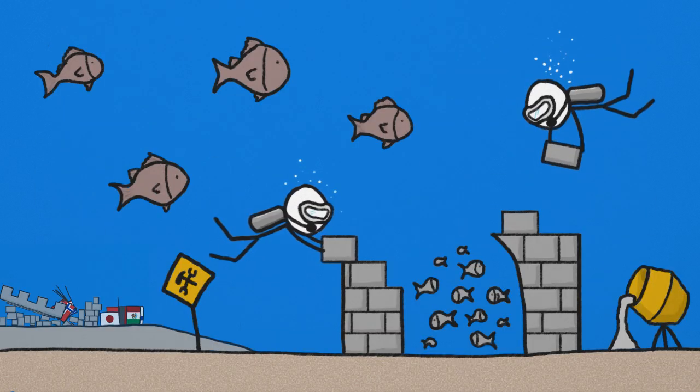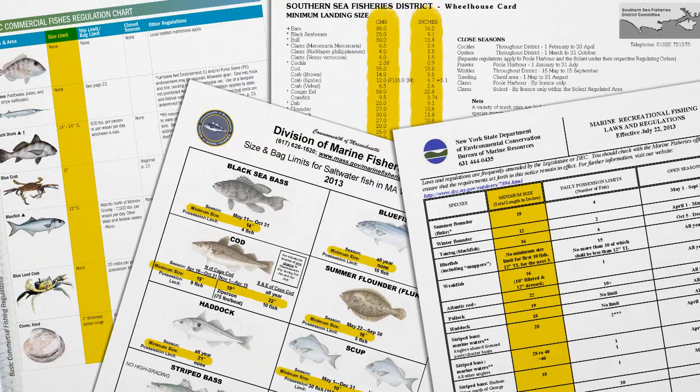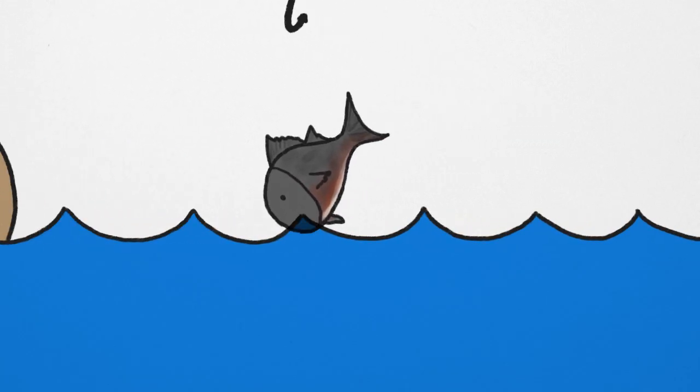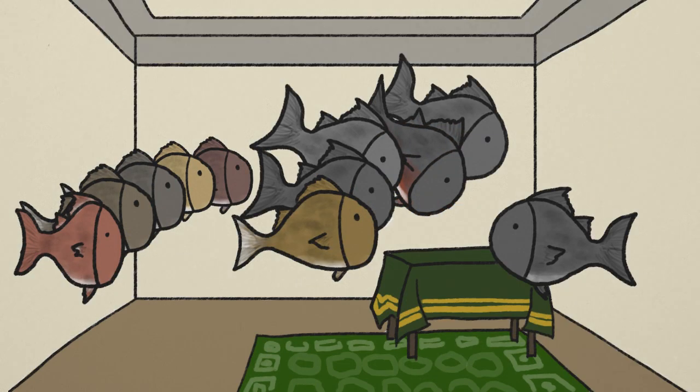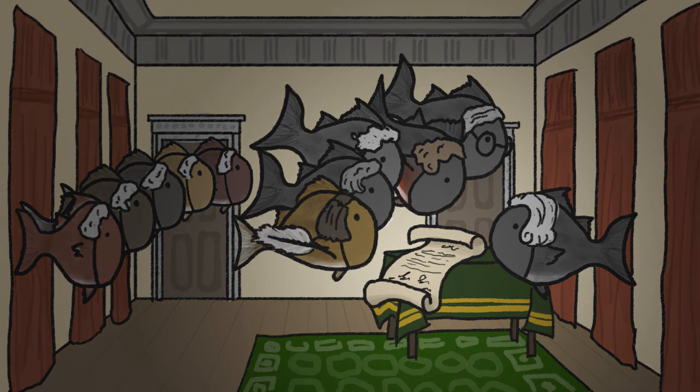However, old habits die hard, and the use of size limits is deeply ingrained in our collective fisheries management DNA. But sooner rather than later, we'll have to accept that it's good to let some of the big ones get away, for only they can change the course of fishtery.